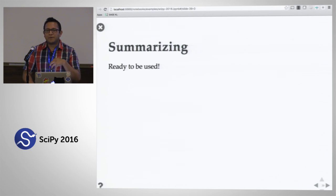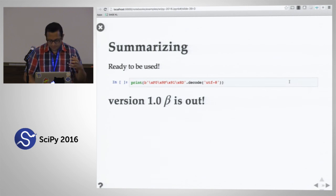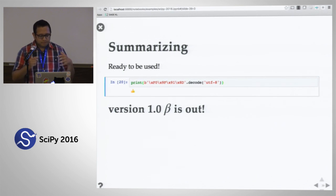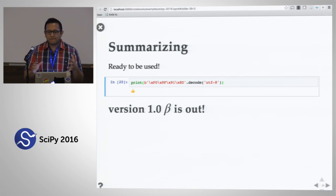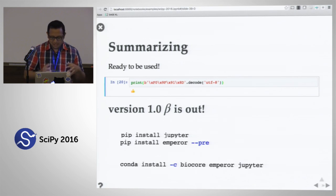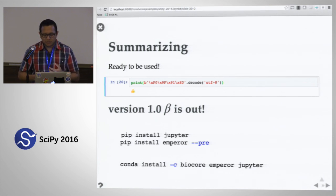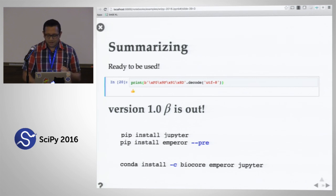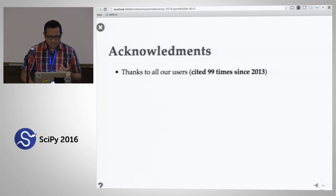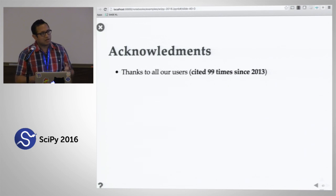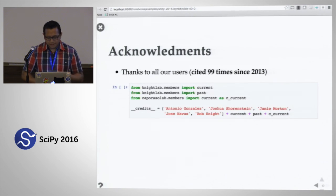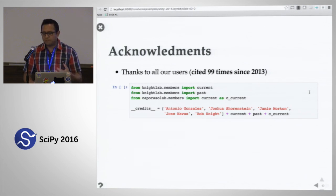Just to wrap up: Emperor is ready to be used. As of yesterday we released our first stable release, which I think deserves celebration. We're very proud to have this available on Conda and pip — it was an entire journey to learn how to use these tools, but we encourage you to try it out. If you have any questions, I'll be around during the sprints. I would also like to acknowledge all of our users — to this day, according to Google Scholar, we've been cited around 99 times — and the amazing people I get to work with who have helped us develop this tool. Thanks.